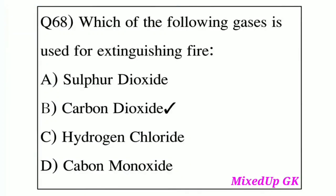Question number 68: Which of the following gases is used for extinguishing fire? Option A: Sulfur Dioxide. Option B: Carbon Dioxide. Option C: Hydrogen Chloride. Option D: Carbon Monoxide. The answer is Option B, Carbon Dioxide. Carbon Dioxide is used to extinguish fire.